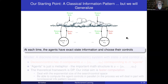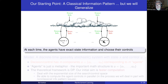I'm going to start with the classical information pattern problem and generalize as we go along. Remember, in the classical information pattern everybody is cooperating and everybody knows whatever everybody else knows. You can simplify the system conceptually as having a cloud that collects all the information, computes the state, and sends it back to the agents who choose their decisions based on policies. At each time, the agents have exact state information conceptually provided by the cloud, and they choose their controls as functions of this state information.